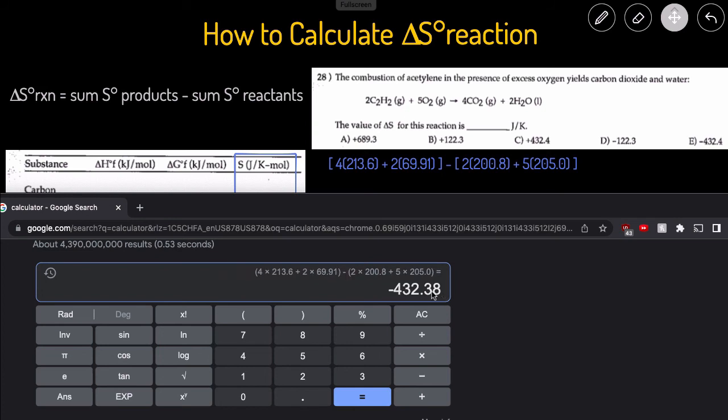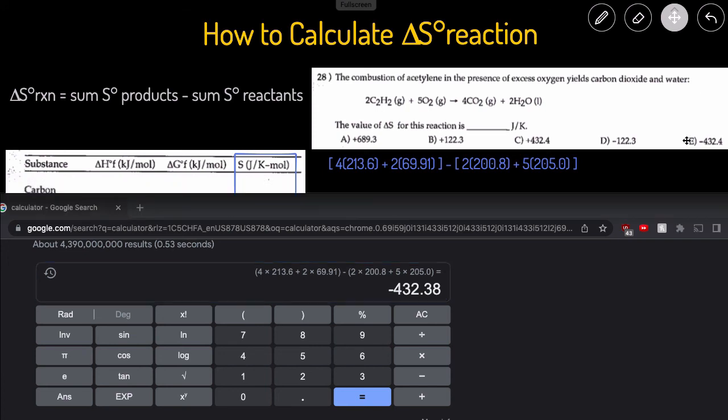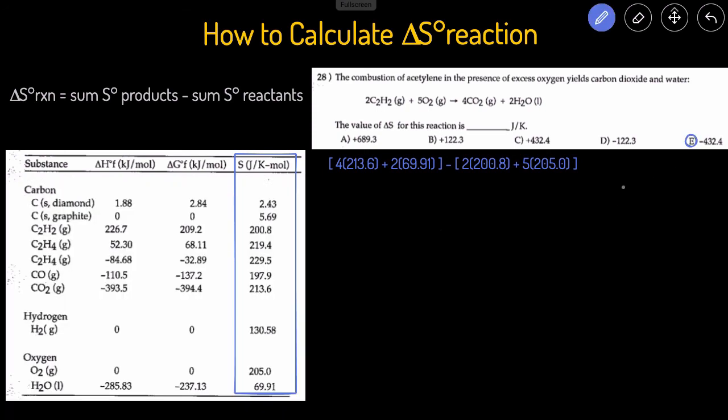And click enter. And then that gives us negative 432.38. And the closest answer to that is negative 432.4. So the units for the delta S, the change in the entropy of the reaction, is typically going to be in joules per kelvin. And that's one technique that you can use to calculate the change in entropy, the change in S of a reaction, of the sum of the products minus the sum of the reactants.